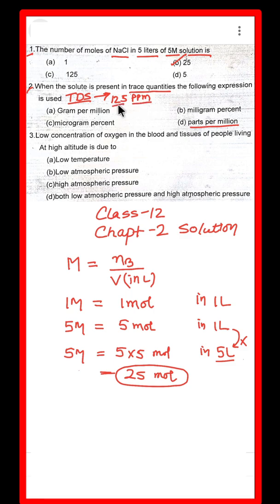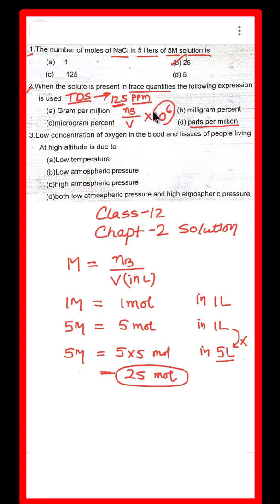125 ppm means that value is measured with respect to 10 raised to the power 6. We multiply the number of moles of solute dissolved by 10 to the power 6 divided by the volume of solution. So parts per million is the term used to express the concentration of solute particles present in very small quantities.